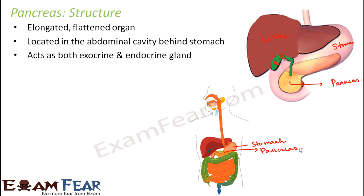The pancreas acts as both exocrine and endocrine glands. Endocrine glands are ductless glands — they pour their secretions directly into the blood. Whereas exocrine glands have ducts, meaning they pour their secretions into tube-like structures.